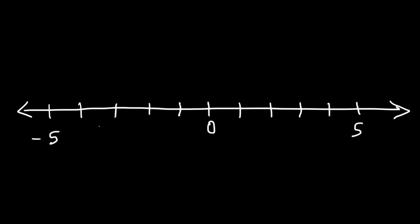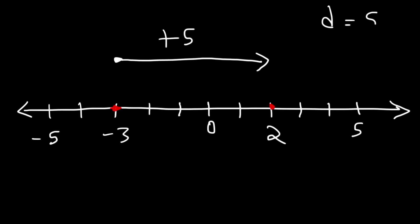Let's start at position negative 3. If we travel to a final position of 2, what is the distance traveled and what is the displacement? The distance traveled is simply 5 units — we traveled 5 units to the right. The displacement is also 5. Whenever you move to the right and don't change direction, the distance and the displacement are the same.